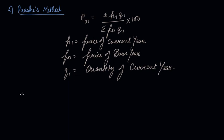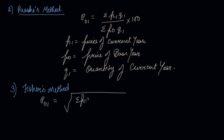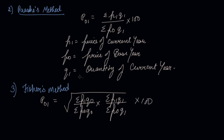The third and most ideal method is Fisher's method of index numbers. The price index of the current year in relation to the base year is calculated by taking the square root of: the summation of P1 into Q0 divided by P0 into Q0, multiplied by the summation of P1 into Q1 divided by P0 into Q1, into 100. Fisher's has combined Laspeyre's and Paasche's methods and taken the square root, then multiplied by 100.